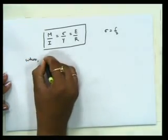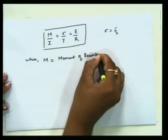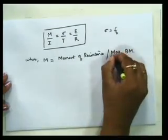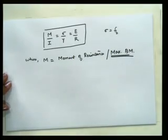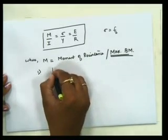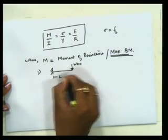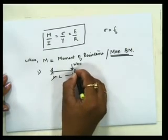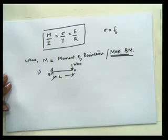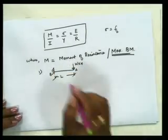Here M is called the moment of resistance, also called the maximum bending moment. To calculate the maximum bending moment, we have different cases. First case: a cantilever beam subjected to a point load W kilo-newtons, span L. At the free end A the bending moment is 0, and at the support the bending moment is maximum.